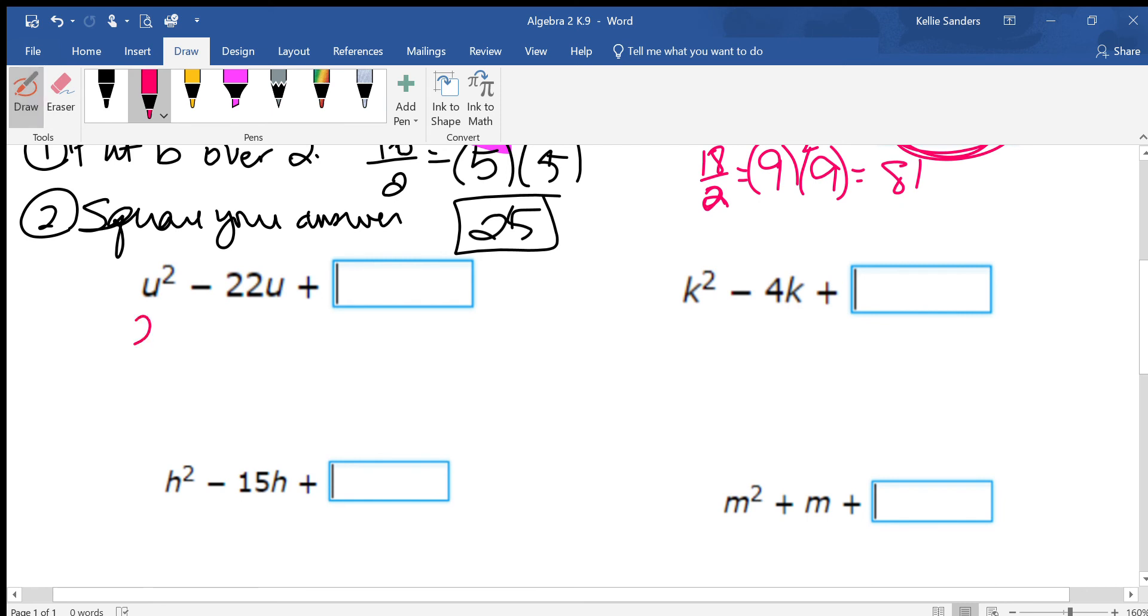So we have 22. Do not worry about the negative sign. You put it over 2. 22 divided by 2 is 11. 11 times 11 is 121.